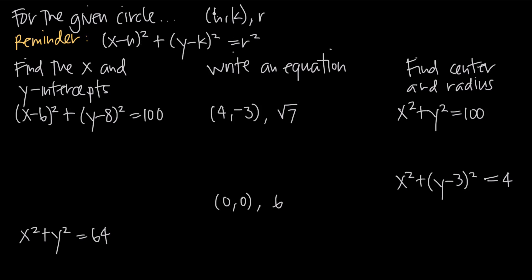You'll often see the specific case where the center of the circle is at the origin, at the point (0, 0). If the center is at (0, 0), then h and k are both zero. Plugging in zero for h gives x minus zero, or just x squared. Plugging in zero for k gives y minus zero, or just y squared. So x squared plus y squared equals r squared is a simpler version of this equation when the center is at the origin, and the radius is still r.